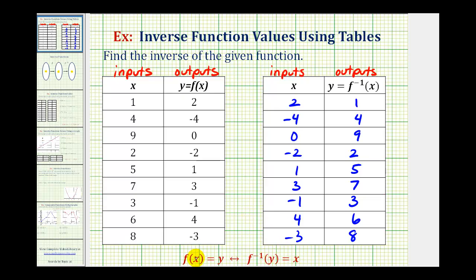x is the input into our function f, y is the output of function f, which becomes the input into the inverse function, which returns the original value of x. So these two functions undo each other.